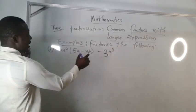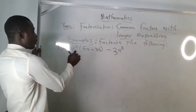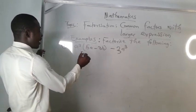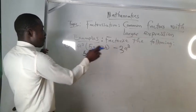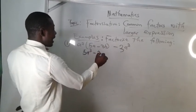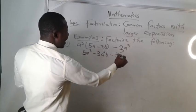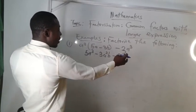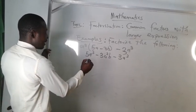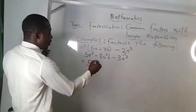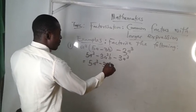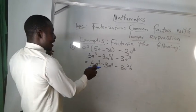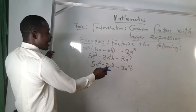Now, a squared is multiplied by what we have in the bracket. Let's open the bracket: a squared times five a gives us five a cubed, and a squared times minus three b gives us minus three a squared b. Then minus three a cubed. Let's put them together: five a cubed minus three a cubed minus three a squared b.